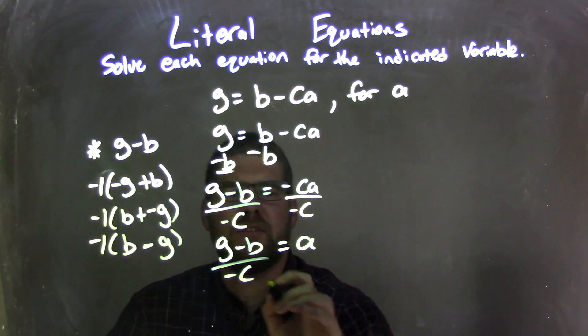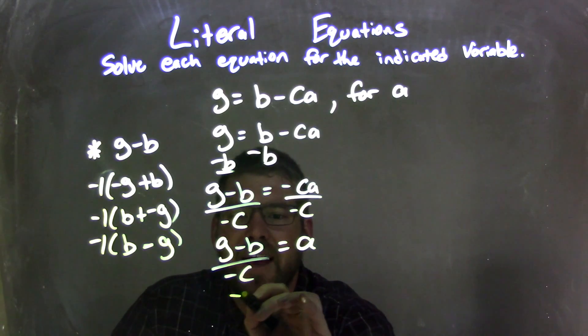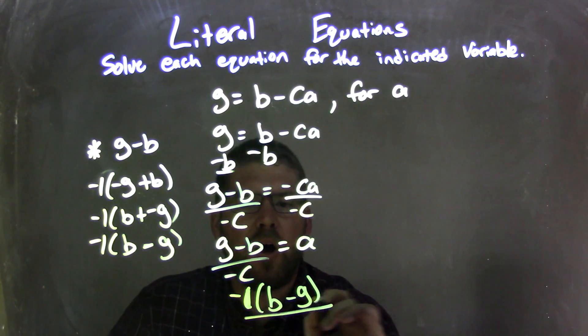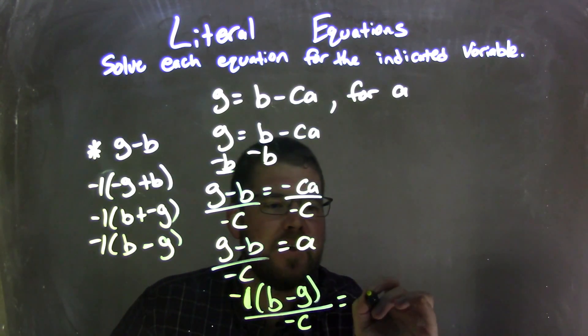And so what that does is I can rewrite this to be negative one times B minus G all over negative C, and that's equal to A.